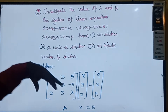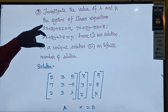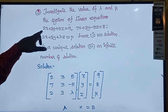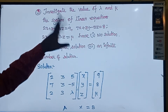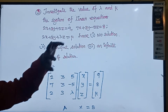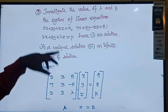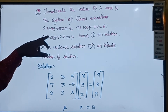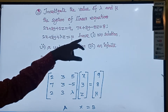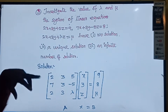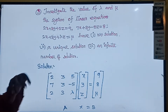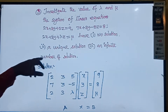Investigate the value of lambda and mu for the system of linear equations: 2x + 3y + z = 9, 7x + 3y - z = 8, and 2x + 3y + lambda·z = mu. The first case is no solution, the second is a unique solution, and the third is an infinite number of solutions.